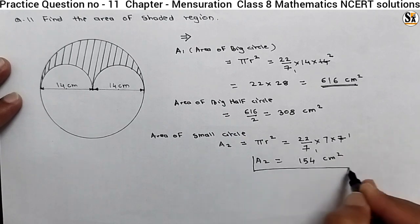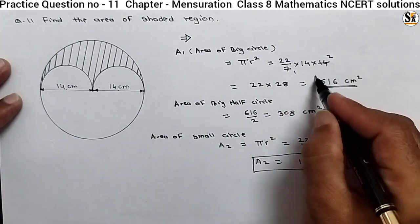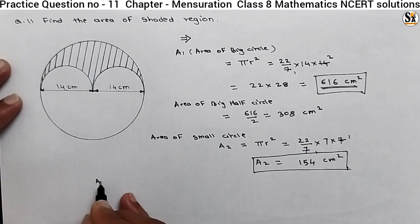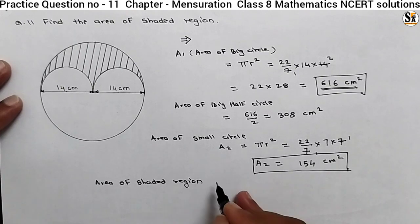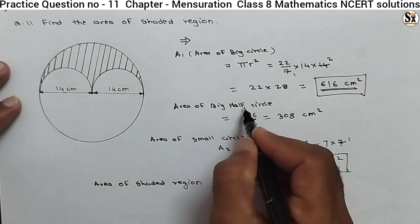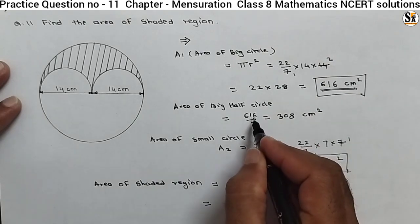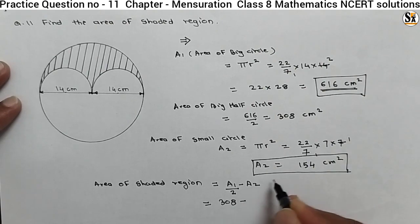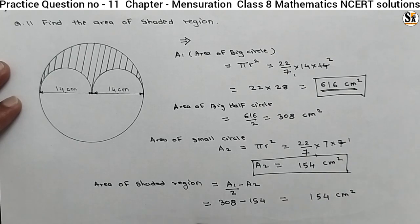At A2, we got 154. A2 means the area of both half circles. And A1 we got as 616 centimeter squared. Now, the area of the shaded region is equal to A1 upon 2 minus A2. A1 upon 2 means the area of the big half circle — this half portion. So 616 divided by 2 is 308, minus A2 which is 154. Subtracting: 308 minus 154 gives 154 centimeter squared. So our final answer is 154 centimeter squared.